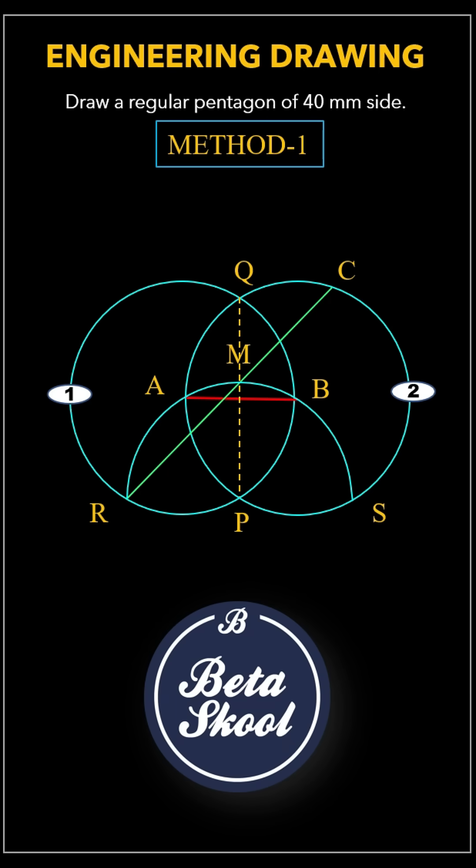Now, from point S, draw a line to point M and extend it as well. It will meet circle 1 at a point. Label it as point E.